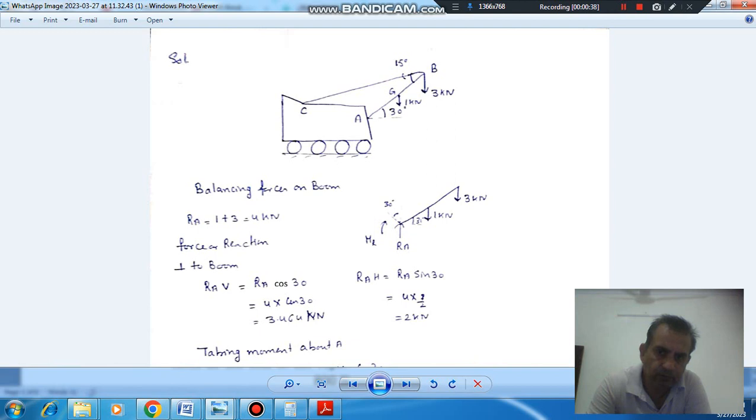So this is your boom AB and this is your cable. And here the load is 3 kN. The weight of the boom is 1 kN.